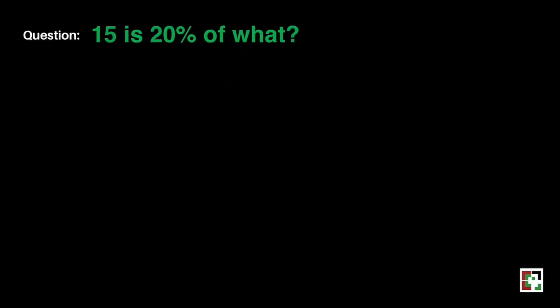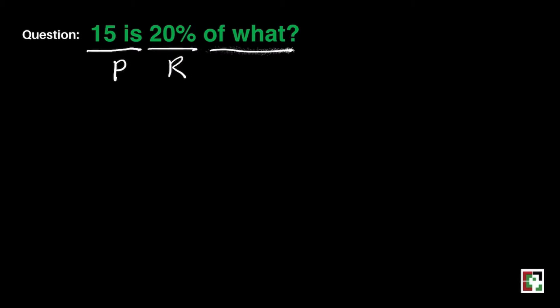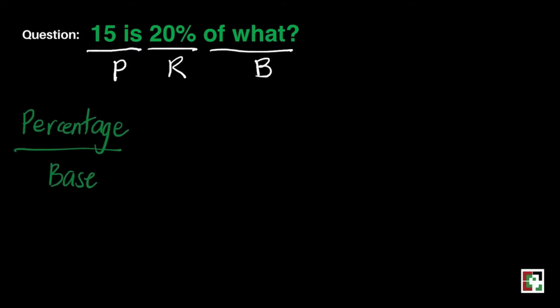Let's have the first question: 15 is 20% of what number? It is important that we identify the base, rate, and percentage in a given problem. For this case, 15 is our percentage, 20% is our rate, and the unknown is our base. We'll be using the formula: percentage over base is equal to rate over 100. This is the same formula we used in finding the percentage last time.